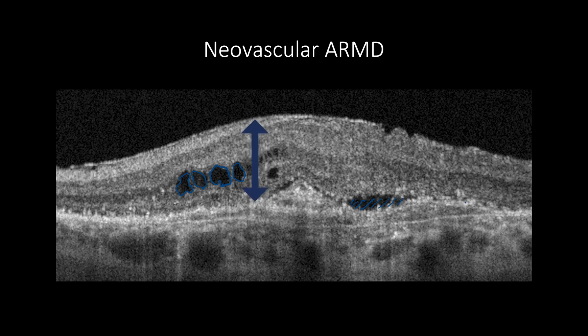Intraretinal cysts are associated with disrupted external limiting membrane and ellipsoid zone, which in turn hold an independent factor of poor visual prognosis in the presence or absence of intraretinal cysts.